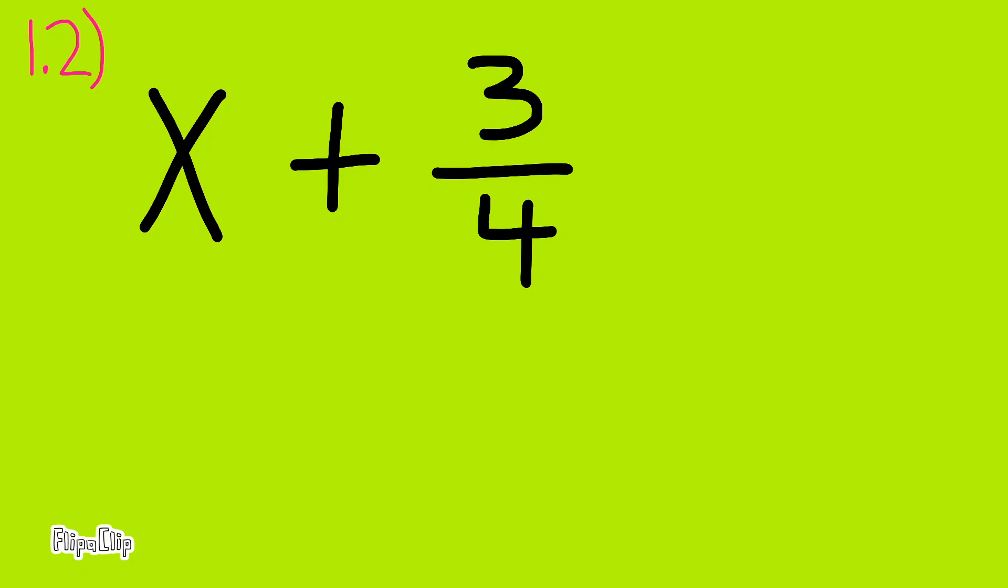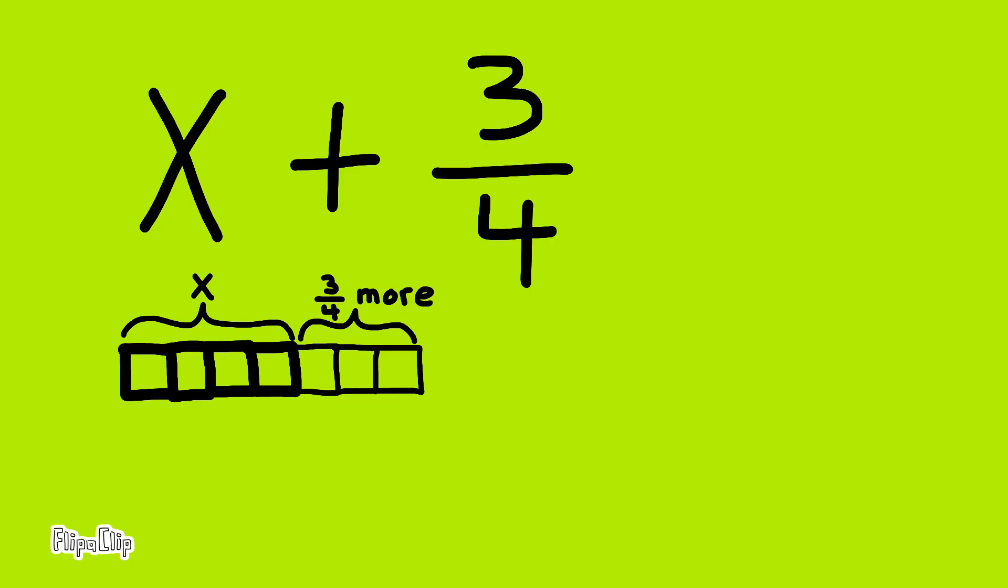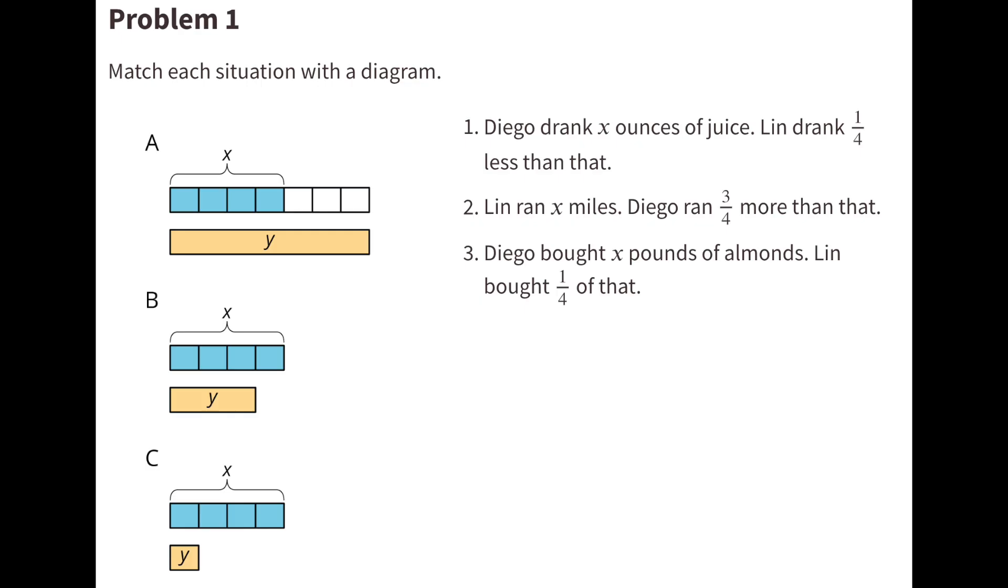X plus 3 fourths. This represents X. And this represents 3 fourths more than X. This whole diagram represents X plus 3 fourths of X. Match one of these situations with the diagram.